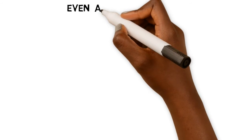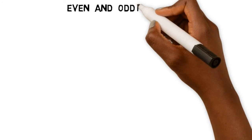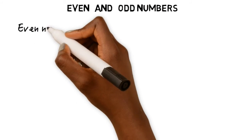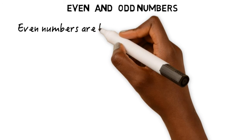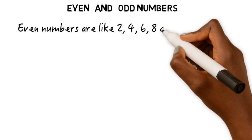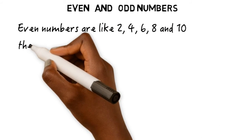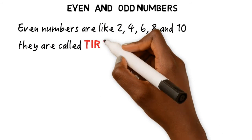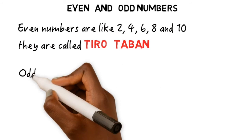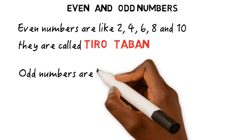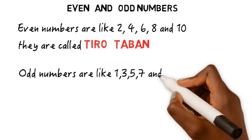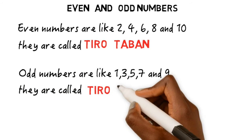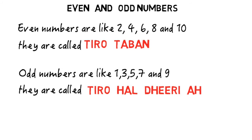Moving on. Numbers are basically even or odd. Even numbers — like 2, 4, 6, 8, and 10 — are called 'Tirothavan.' Odd numbers — like 1, 3, 5, 7, and 9 — are called 'Tirohalderia.'